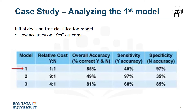In this first model, overall accuracy in classifying the yes and no outcomes was 85%. This sounds good, but it represents only 45% of the yes — the actual readmissions are correctly classified — meaning that the model is not very accurate. The question then becomes: how could the accuracy of the model be improved in predicting the yes outcome?